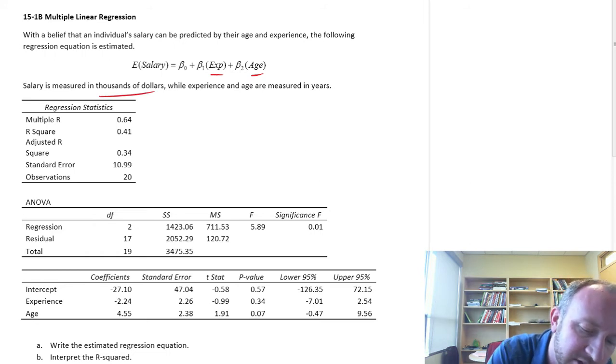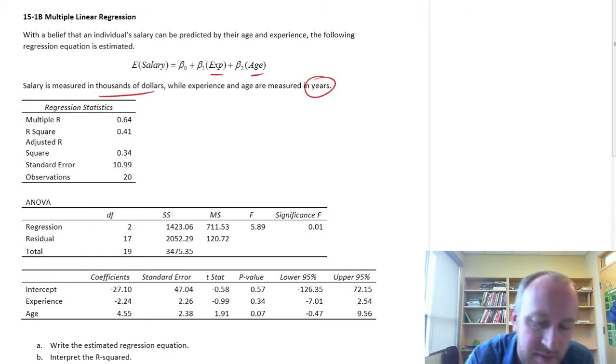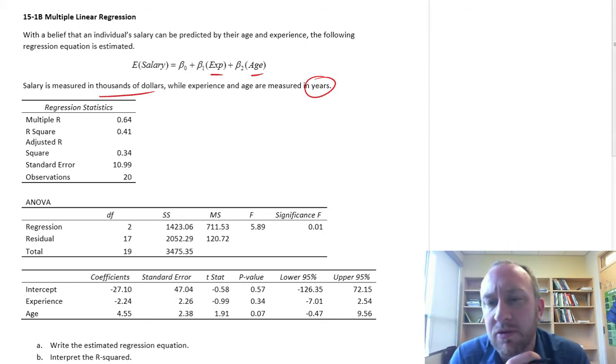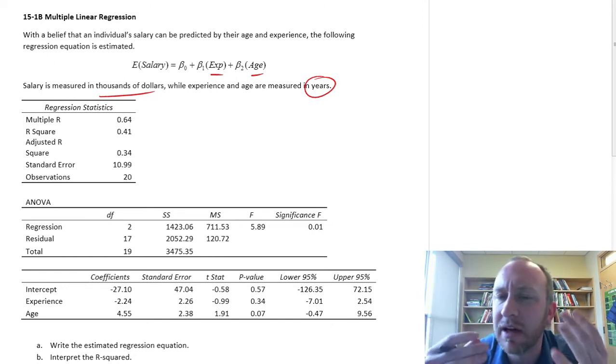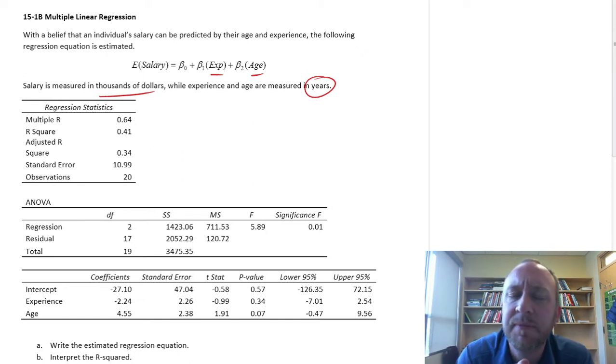So our salary is measured in thousands of dollars, and age and experience measured in years. Now, you might see that and think there's something a little bit funny about using these two independent variables, experience and age. You might think those are going to be very similar, age and years of experience.